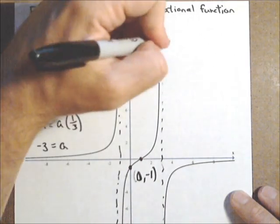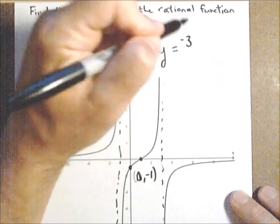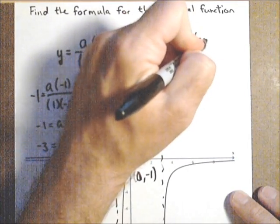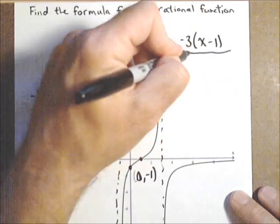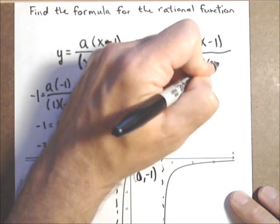We plug that back in and we've got our function. So y equals negative 3 times x minus 1 over x plus 1 times x minus 3.